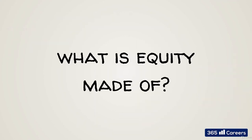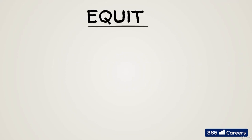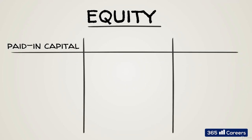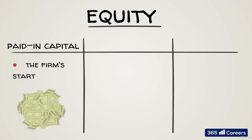Let's see which of the sub-items the equity account is made of. Typically, we would have paid-in capital by shareholders — the firm's starting capital, and any money that comes in later if shareholders decide to increase capital.